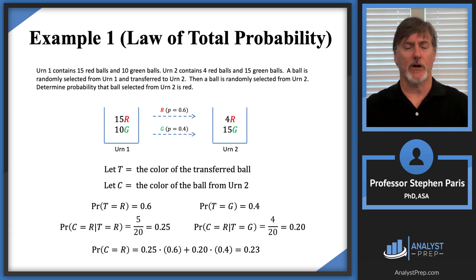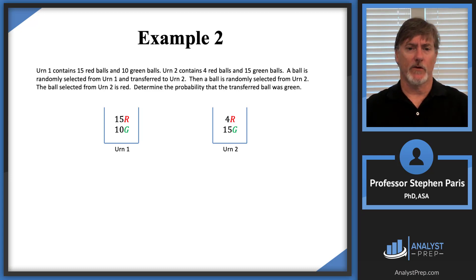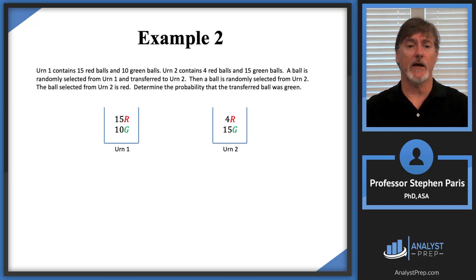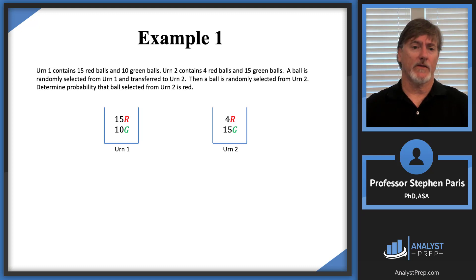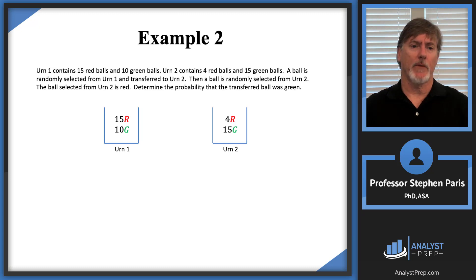Now let's look at the next problem. The first two lines in example two are exactly the same setup as example one. But now the third line says: the ball selected from urn 2 is red — we're given that — and we want to calculate the probability that the transferred ball was green. This is a slightly harder problem. In example one we calculated the probability that the selected ball from urn 2 was red; now we're asked, given that the ball selected was red, what was the probability that the transferred ball was green?